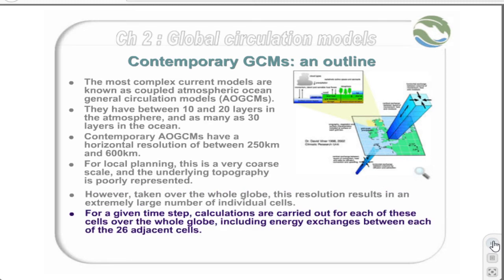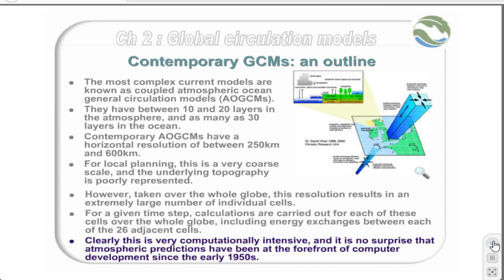For a given time step, calculations are carried out for each of these cells over the whole globe, including energy exchanges between each of the 26 adjacent cells for each cell. Clearly, this is very computationally intensive, and it is no surprise that atmospheric predictions have been at the forefront of computer development since the early 1950s.